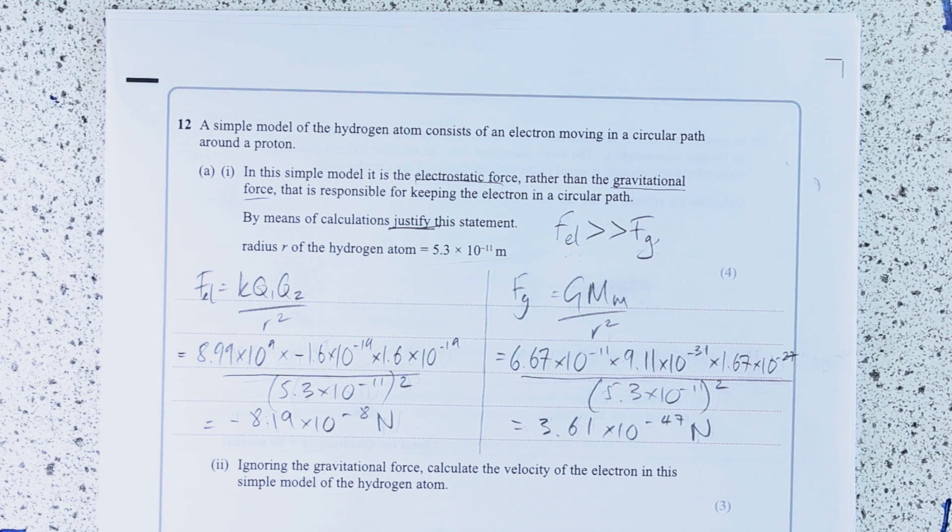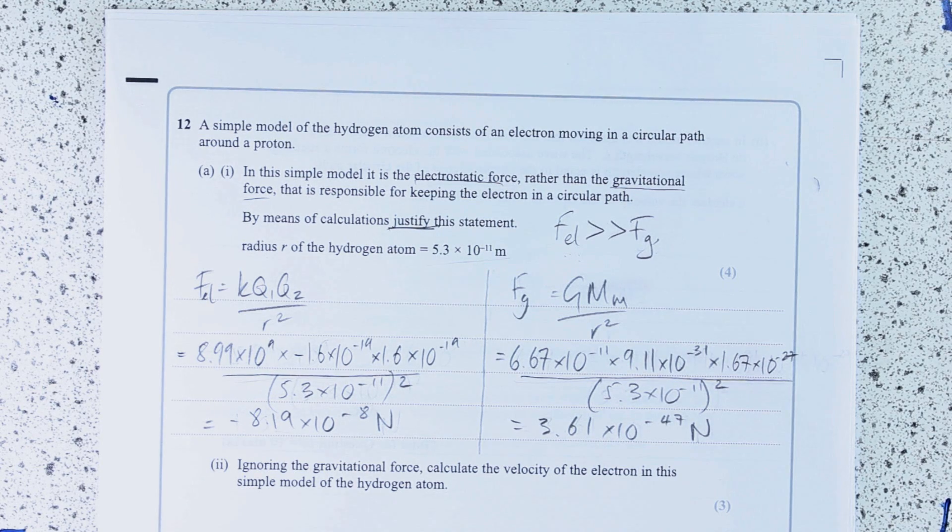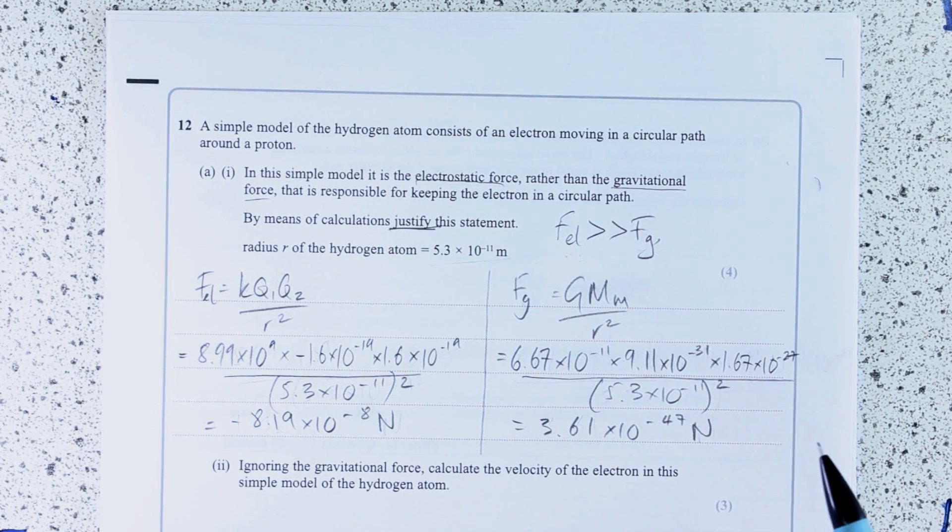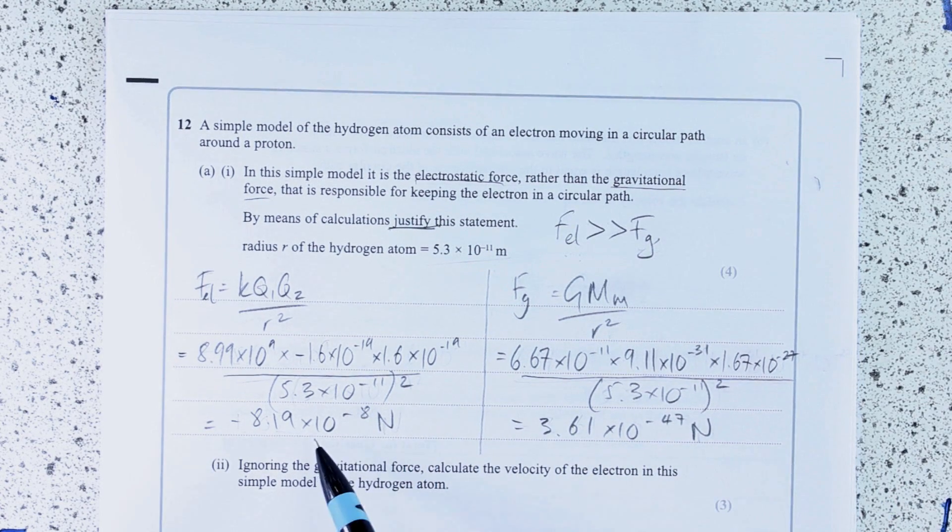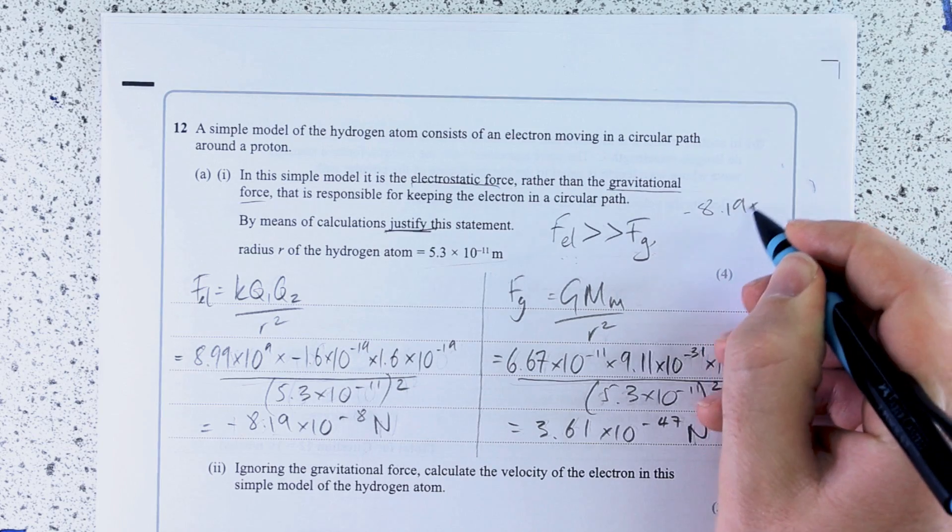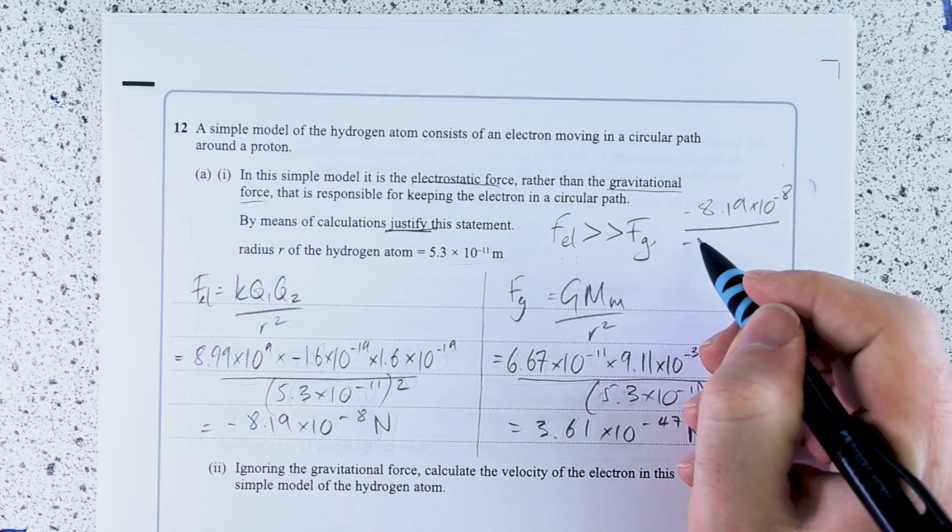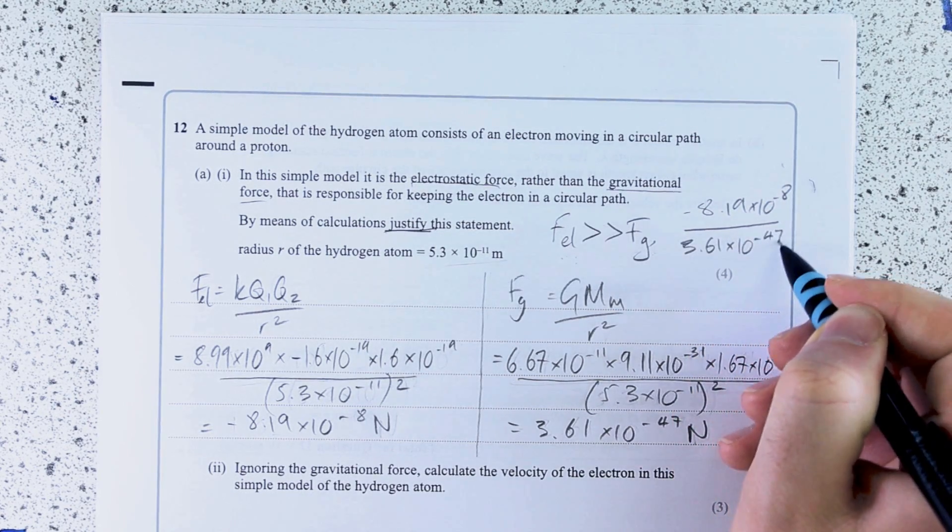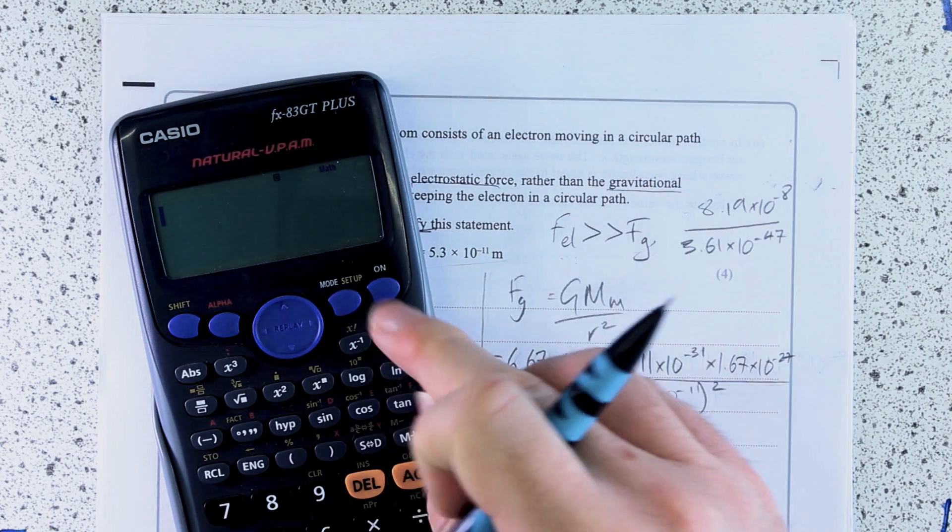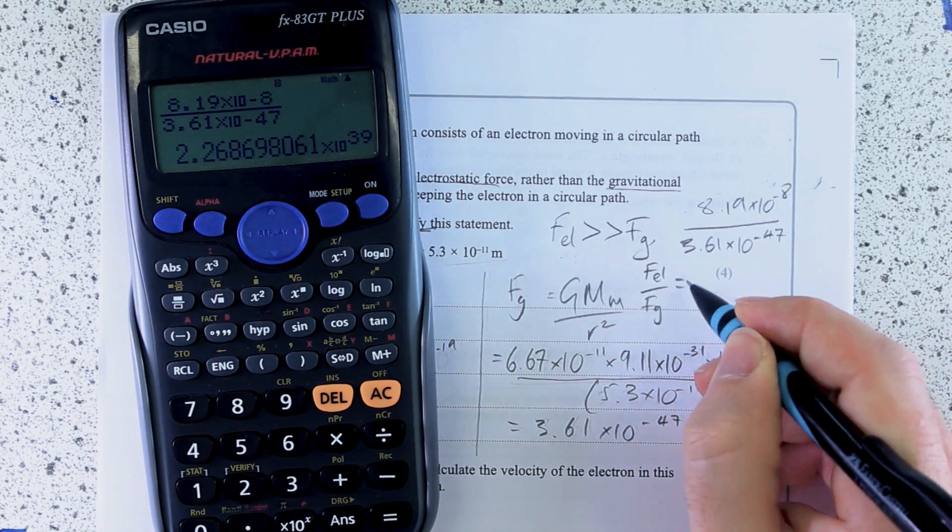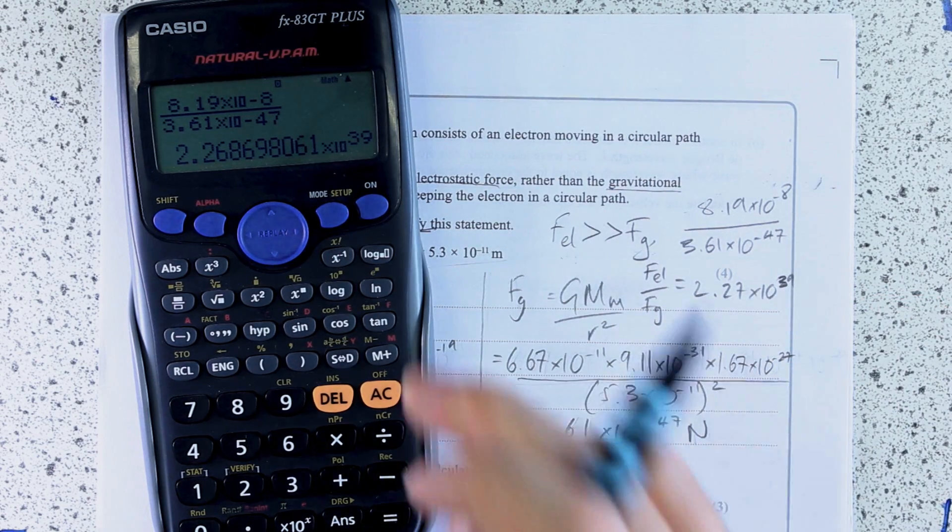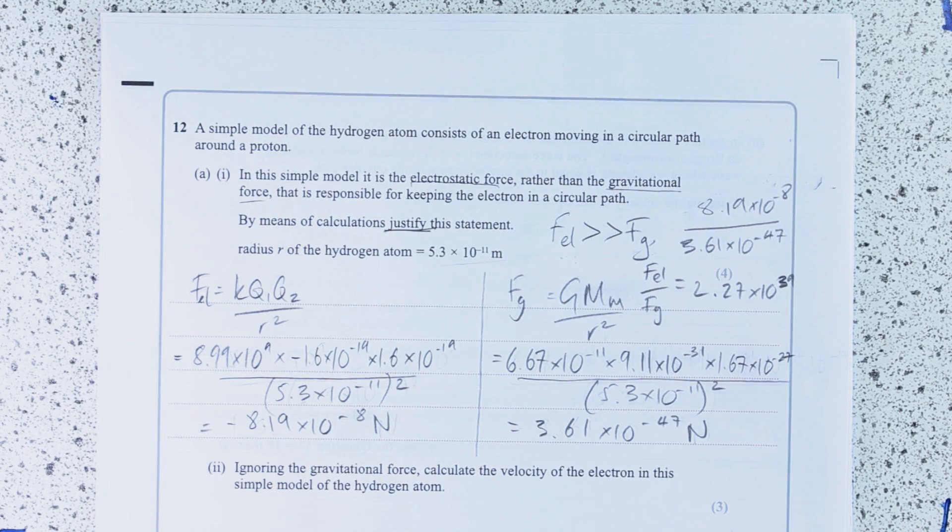So we can actually show that as a ratio, which would tell you how many times greater it was. I'll just do the larger one over the smaller one. So minus 8.19 times 10 to the minus 8 over 3.61 times 10 to the minus 47. The electrostatic force over the gravitational force is 2.27 times 10 to the 39. It's that many times larger. This is why the gravitational force at this scale is absolutely insignificant.